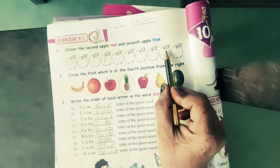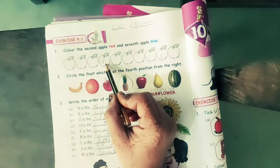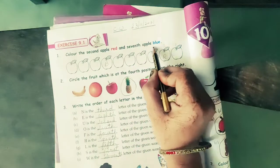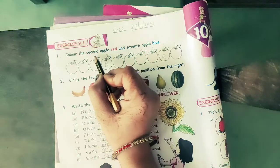So second number you have to do red color and seventh also on the number 7. Seven number you have to mention like this: one, two, three, four, five, six, seventh,